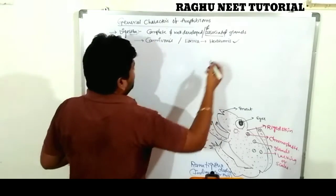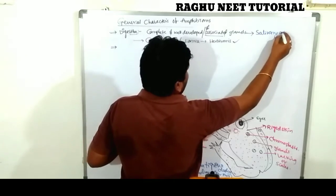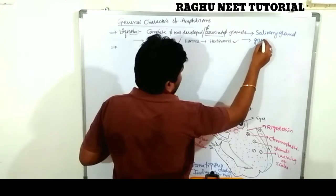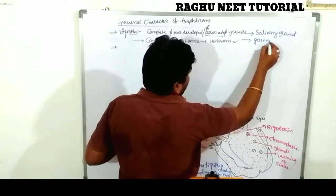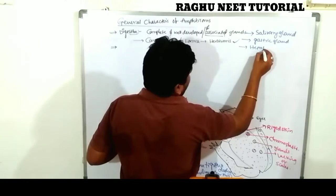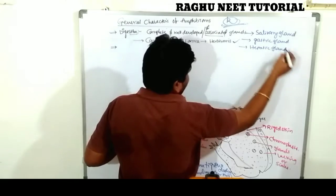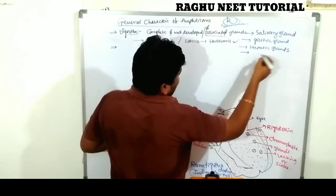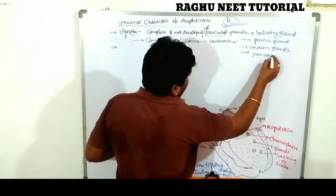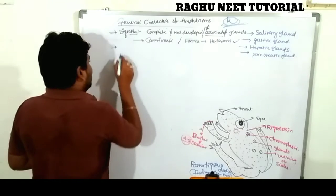The associated glands involved in digestion are: salivary glands, gastric glands (producing HCl — hydrochloric acid), hepatic glands, and pancreatic glands. These are all very important associated glands for digestion.